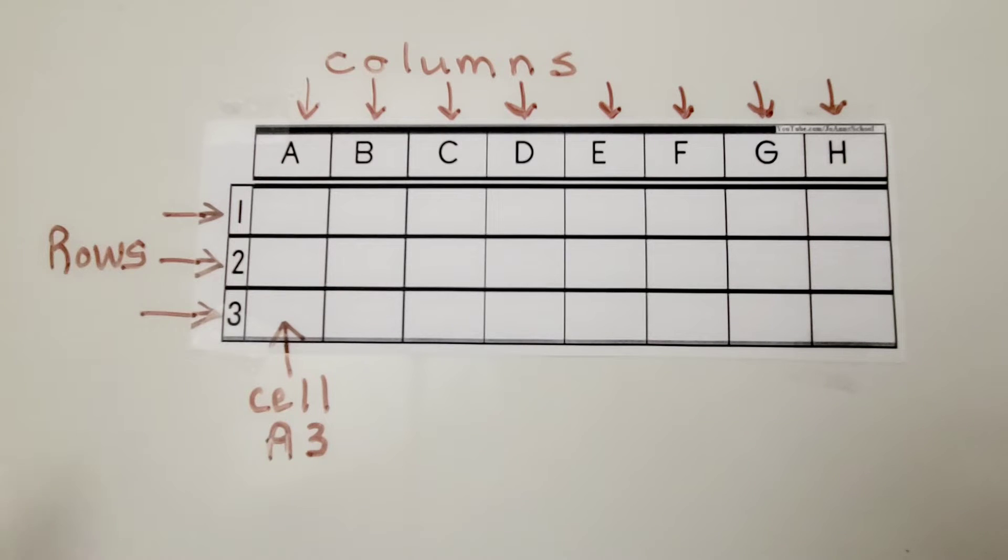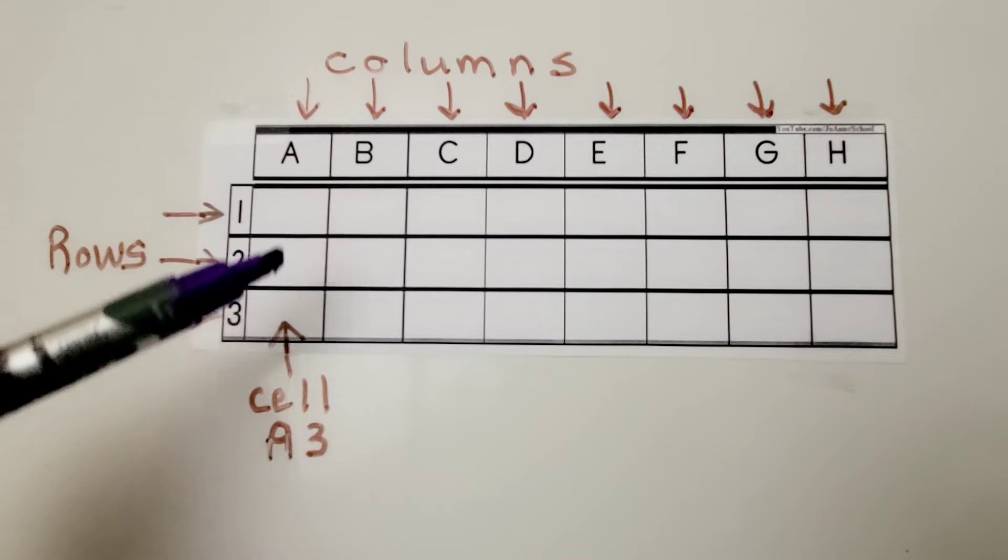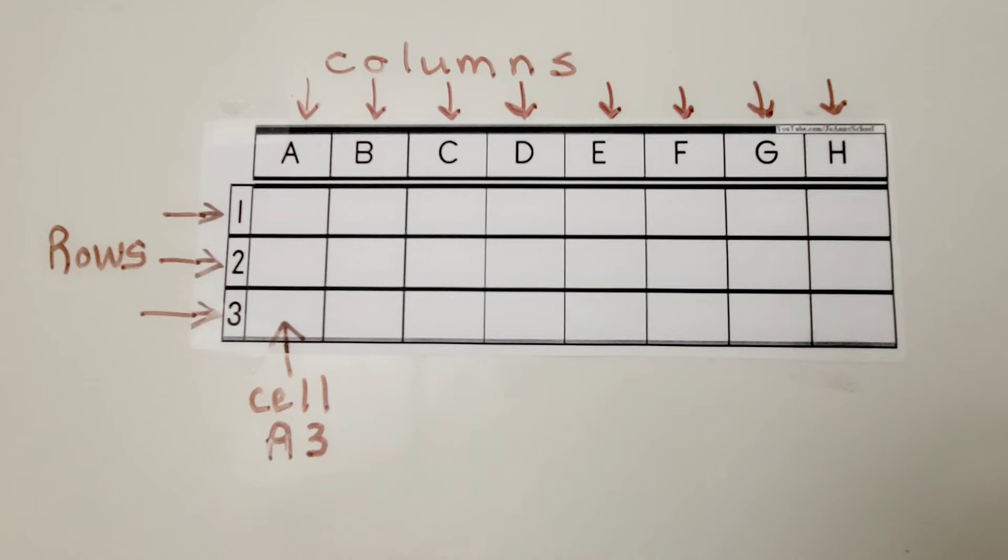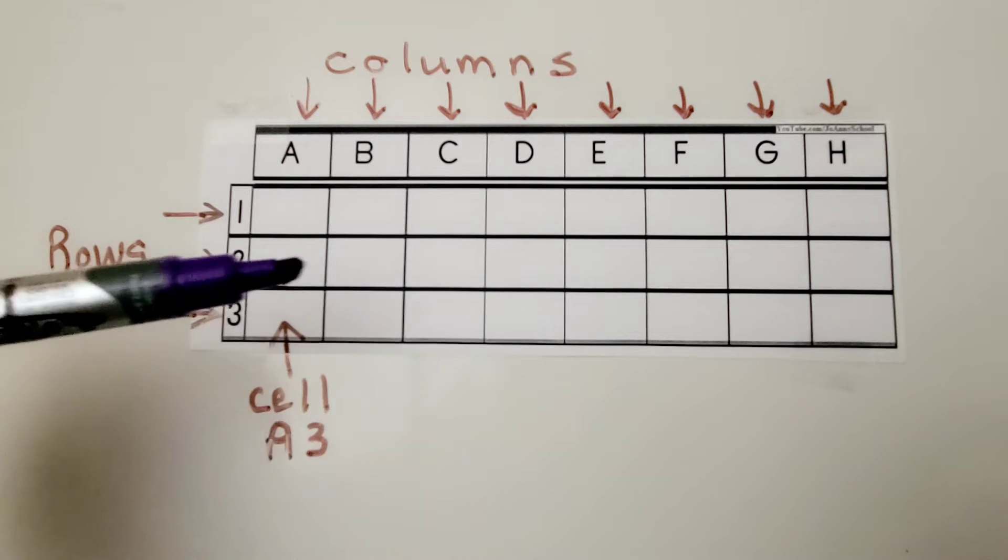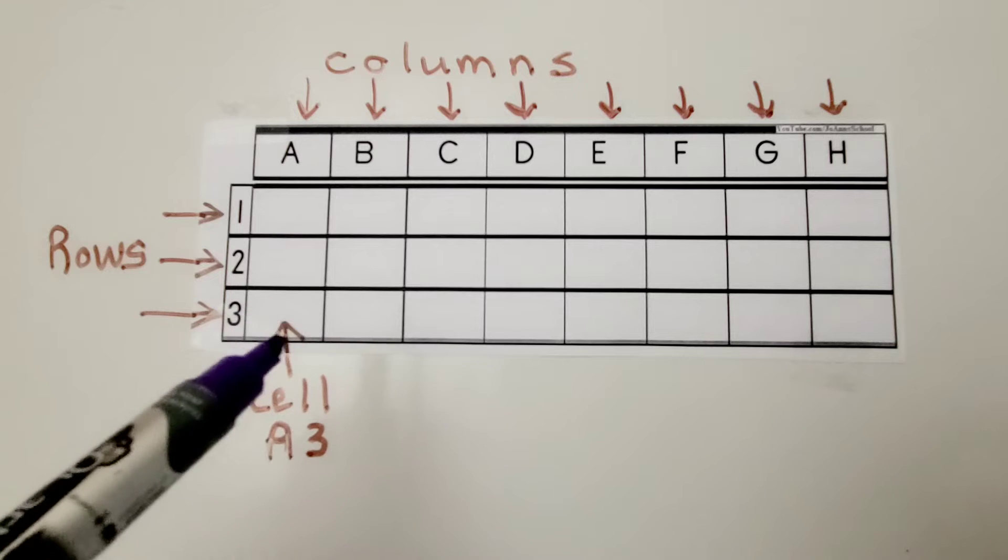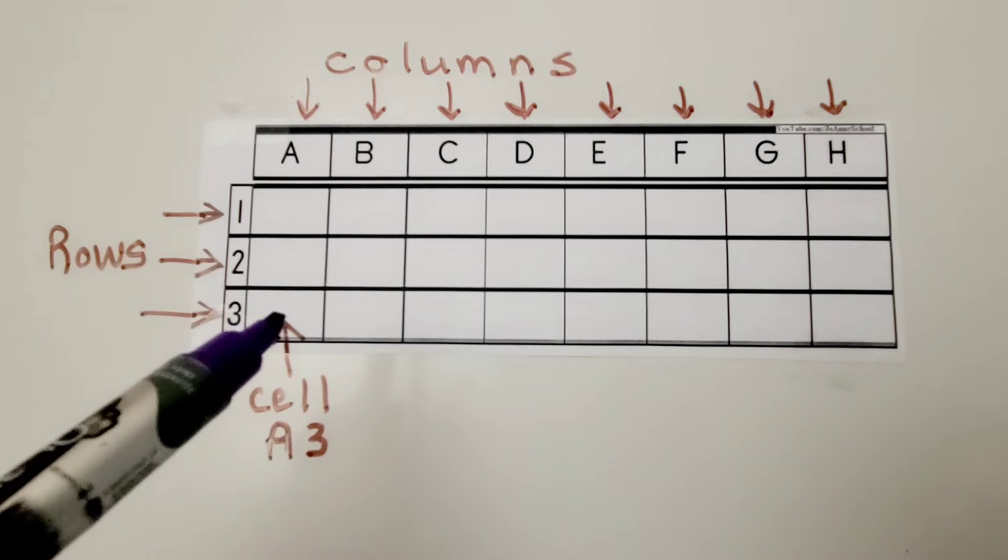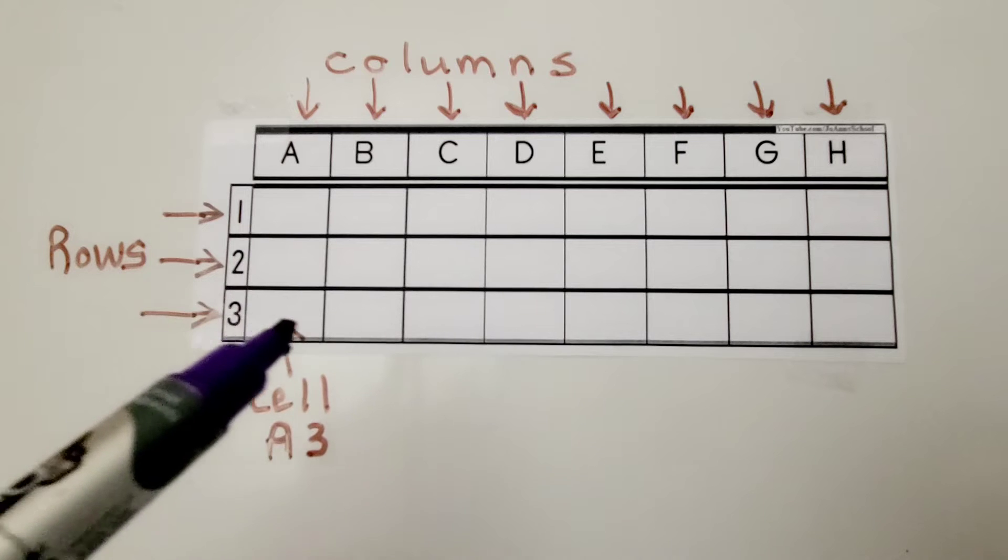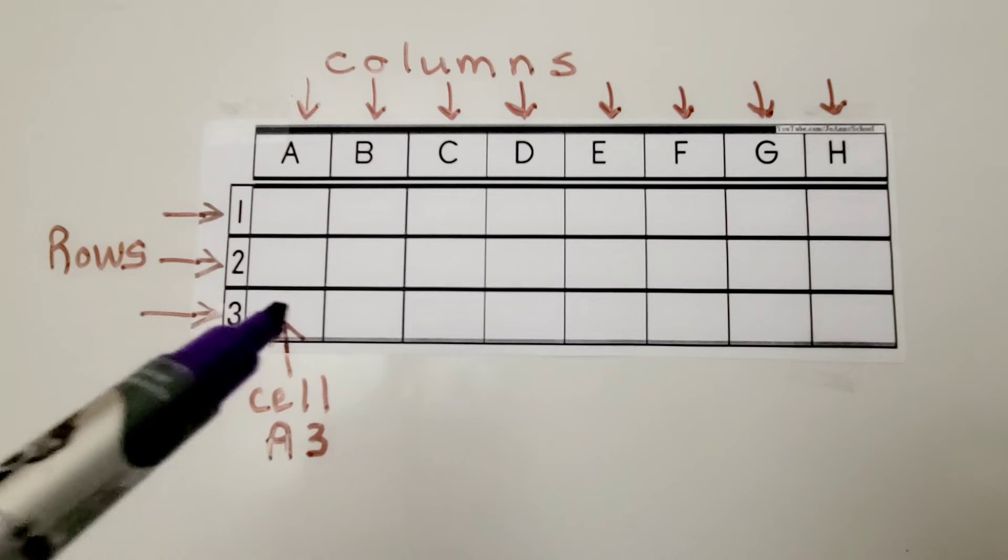The spreadsheet has columns coming down. This is column A, column B, column C, column D, and so on. And it has rows going across. This is row 1, row 2, row 3, and each of these boxes are called cells. And we can type in them. This is cell A3. It's where A and 3 meet.